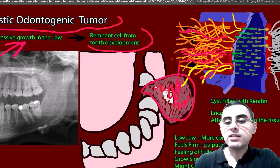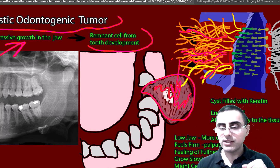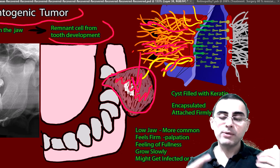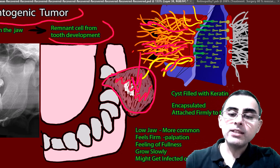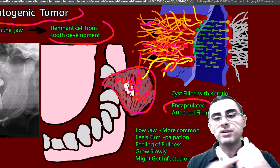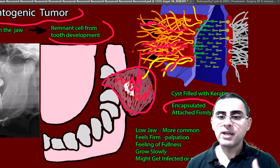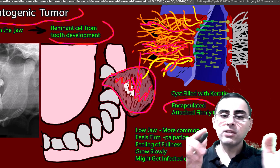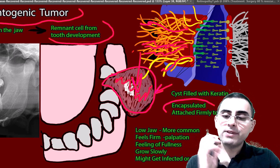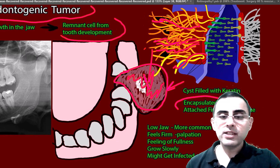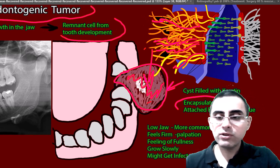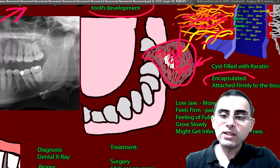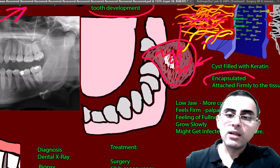This protein is present in this cyst, so it's firmer when you touch it — it's not very soft, though sometimes it can be softer. It's well encapsulated, so when you press you can't rupture it easily. It's firmly attached to the nearby tissues, so it's not movable. Most commonly it's presented on the lower jaw, but it's also possible on the upper jaw.